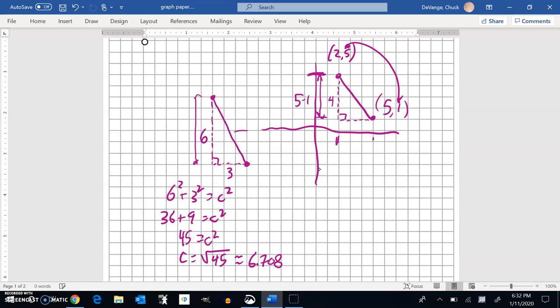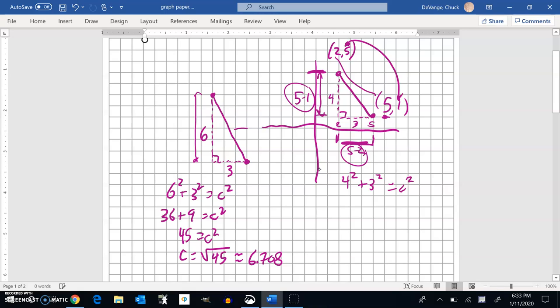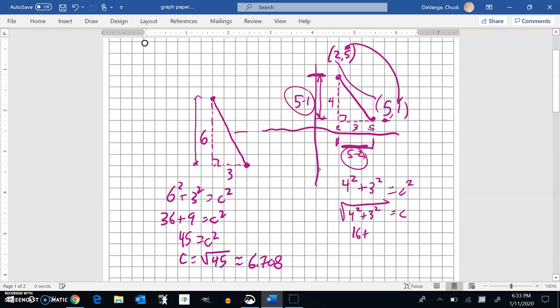And if I think about this one right here, these are the x values. Notice this distance is 5 and this distance is 2. And you can see that it's 3. But it's like 5 minus 2 or 2 minus 5. Whatever. It's 3. So I could subtract these to get that. Subtract these to get that. And then I have 4 squared plus 3 squared equals c squared. And I'm going to end up square rooting this whole thing.